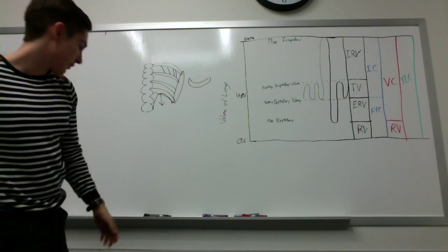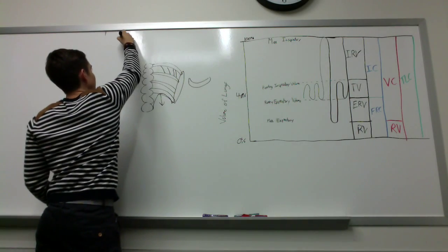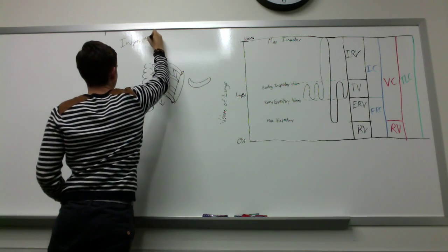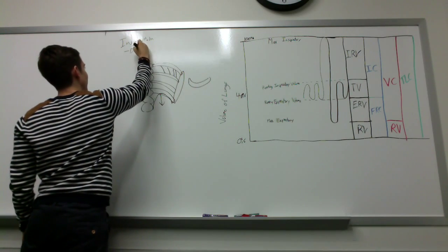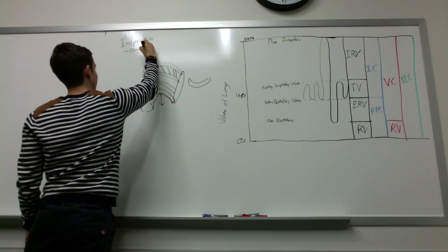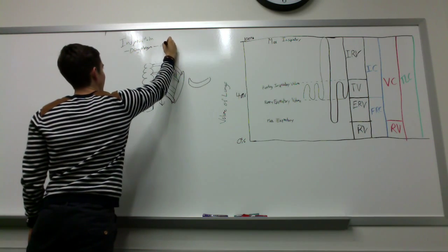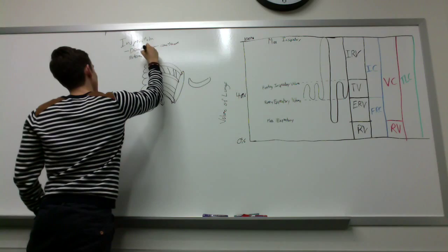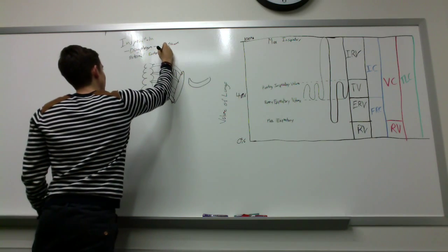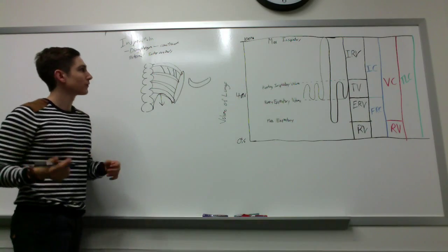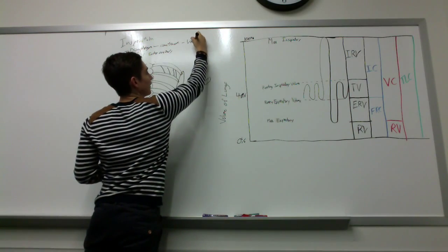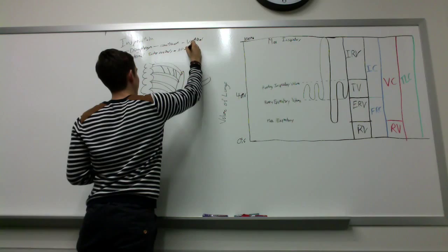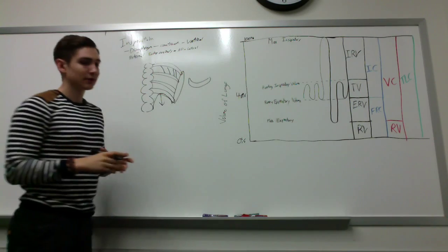Now looking at the muscles involved — starting with inspiration. With normal breathing, you have the diaphragm contracting, which handles the vertical dimension, and the external intercostals, which handle the anterior-posterior and lateral dimensions. So those two muscle groups are responsible for general quiet breathing.